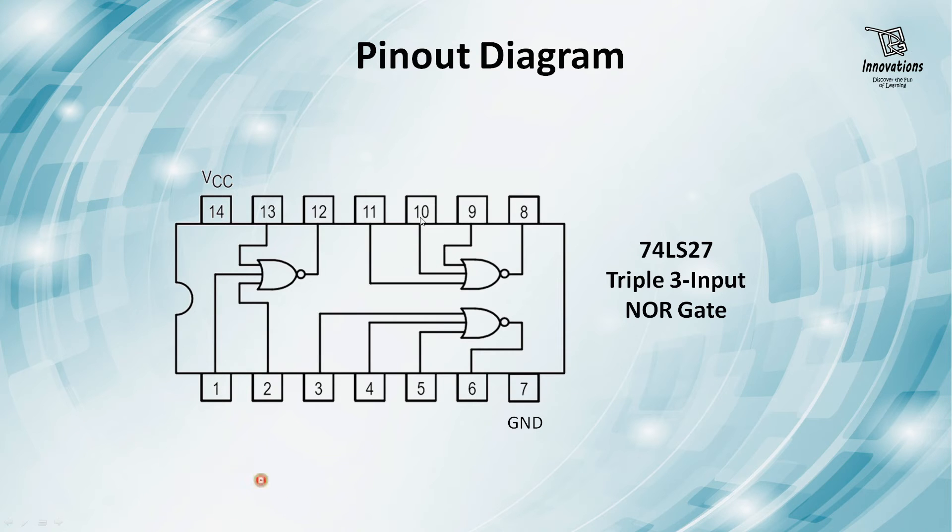And NOR gate 3 is input 11, 10, 9 and output is 8. Pin number 7 is ground and pin number 14 is the positive supply pin. We will test with the second segment of the NOR gate, that is pins 3, 4, 5 input and pin number 6 output.